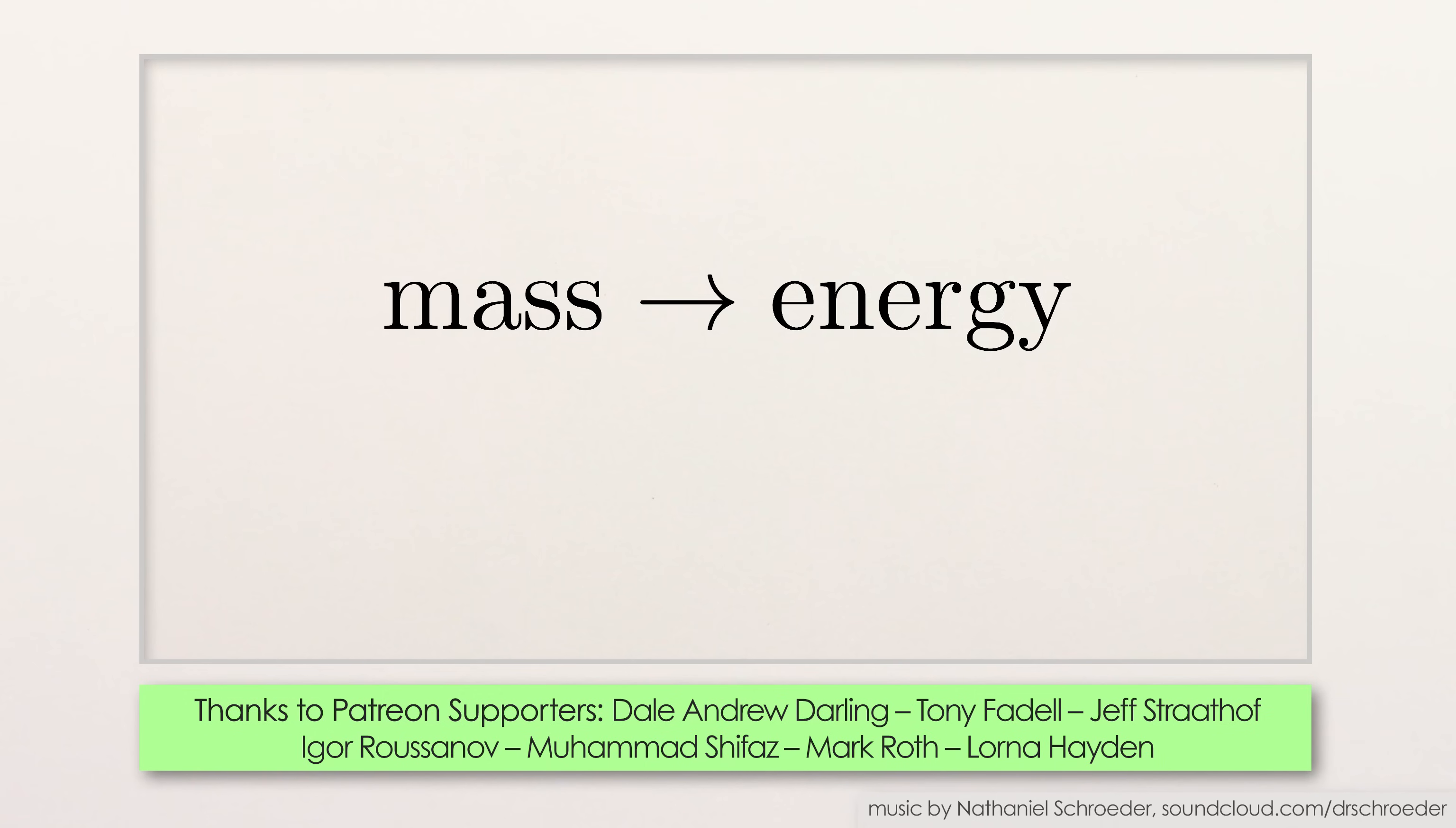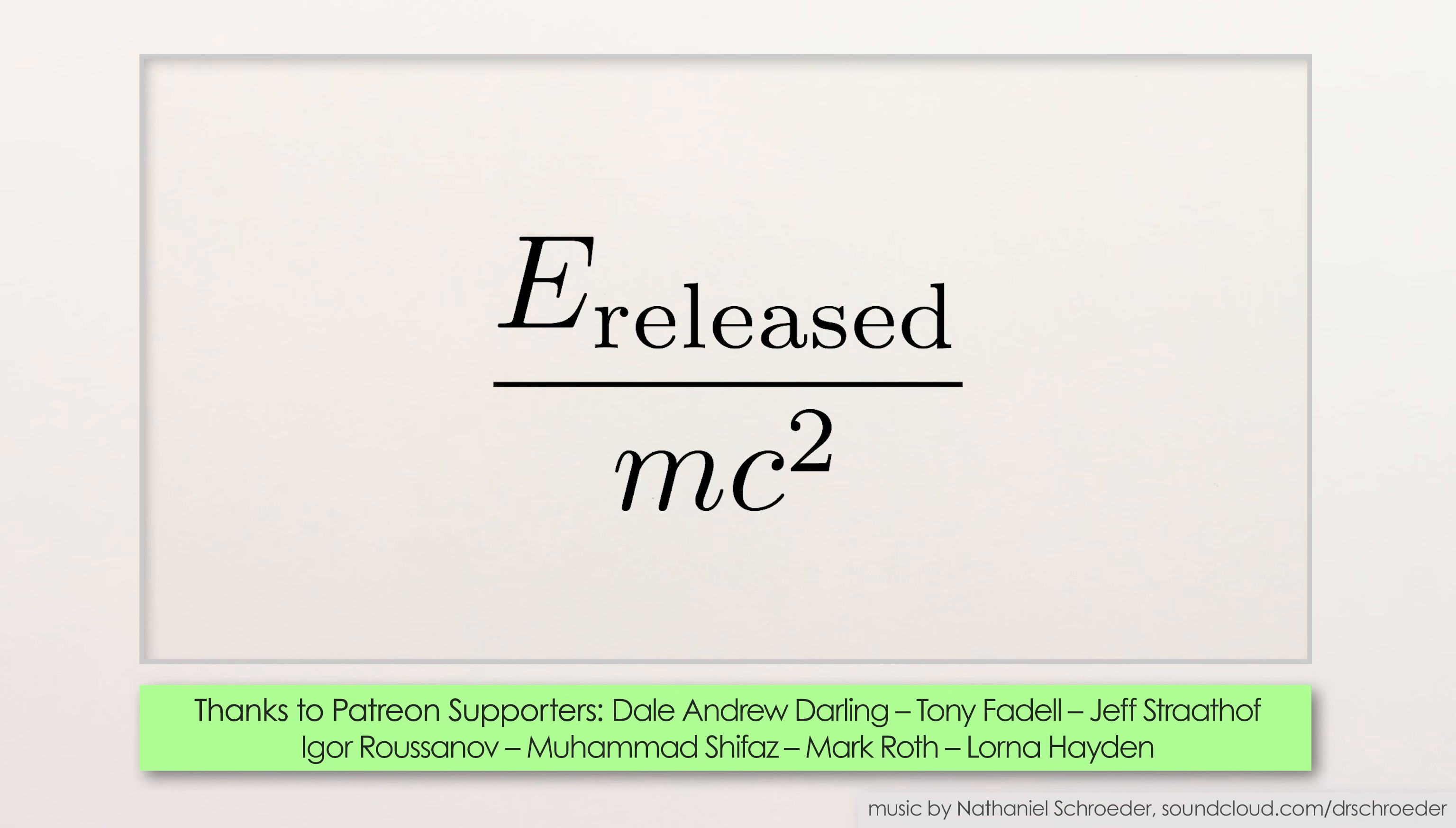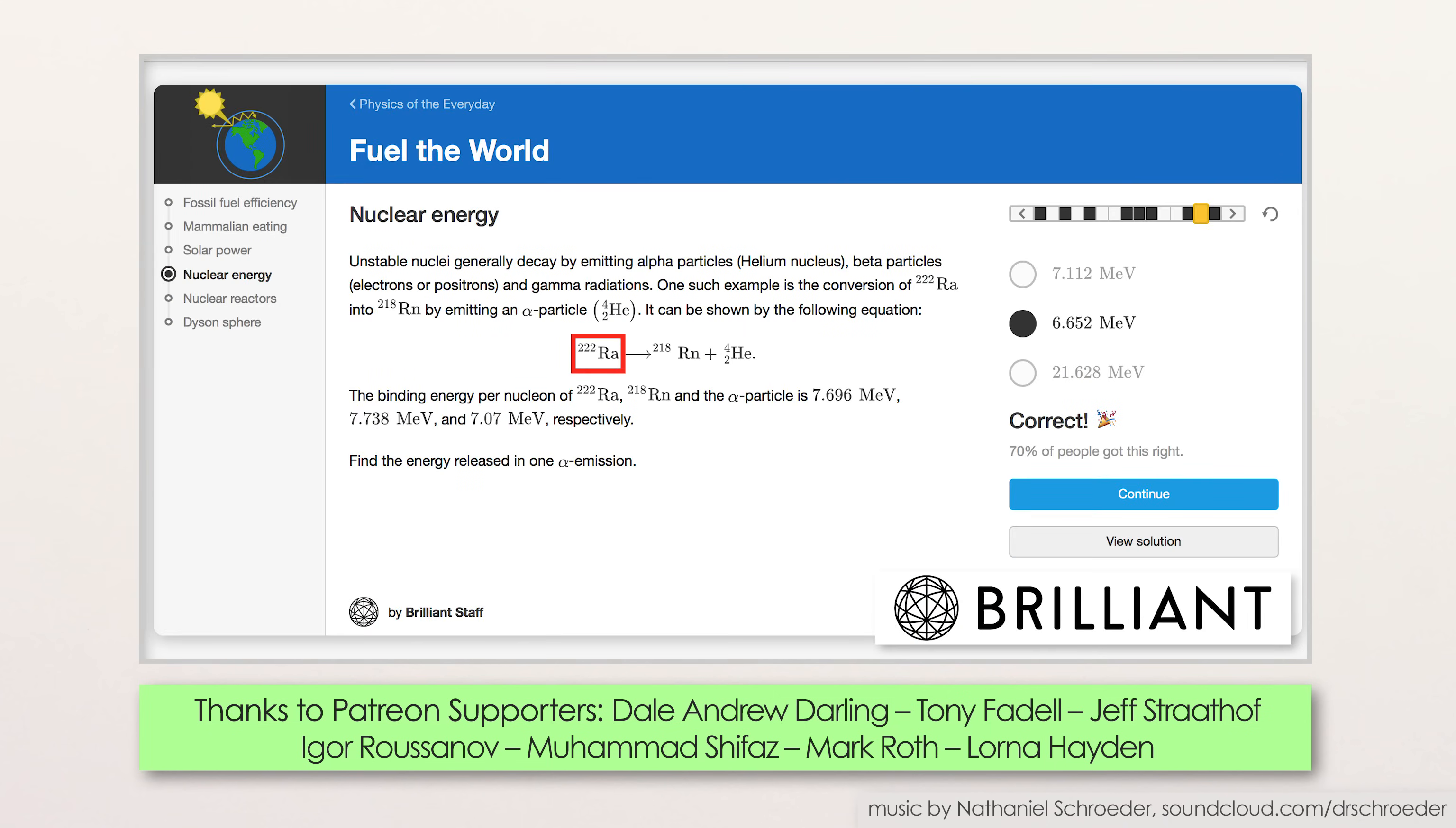If you're wondering how I calculated the efficiencies of converting mass to energy, you can just take the energy any reaction releases and divide it by the mass times c-squared of the things involved. For example, when radium radioactively decays into radon and helium, it releases 6.5 MeV of energy. And the mass energy of a single neutron or proton is about 940 MeV. So I'll leave it to you to figure out how efficient alpha decay is at converting mass to energy.